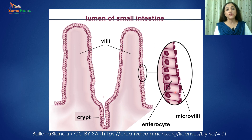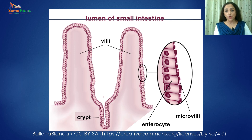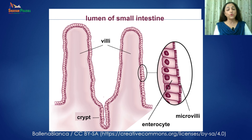The small intestine has a large surface area, which is further increased by the presence of numerous villi and microvilli, to ensure absorption of maximum nutrients from digested food. The number and health of villi is therefore an important indicator of the extent of nutrients which our body will absorb. Now let us explore the disease which affects the health of villi.